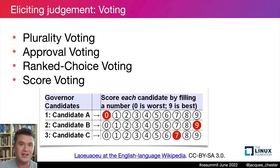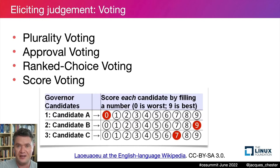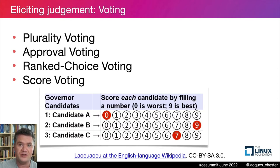Score voting has downsides. The most important is a key assumption: when you say 'two out of ten' and I say 'two out of ten,' it assumes our internal values for that score are the same. That's a mighty big assumption. You may have given two because you think the project is rubbish; I gave two because I don't know the project and I'm being conservative. These are not the same opinion, but score voting treats them as if they were.